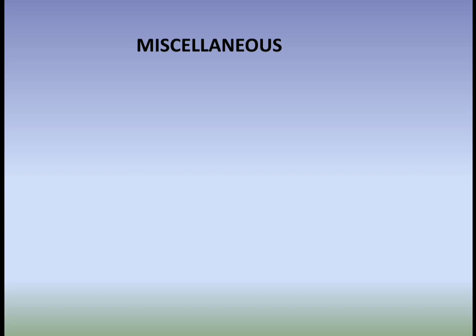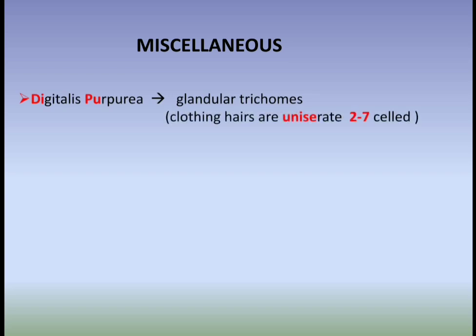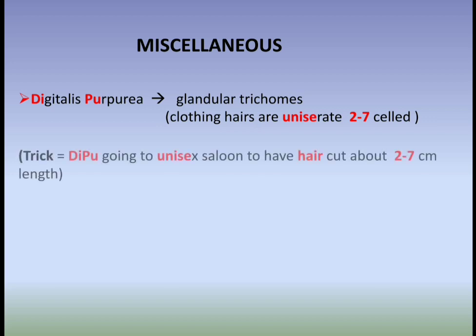Now for miscellaneous drugs. Digitalis purpurea shows granular trichomes and clothing hairs are unicellate, which are two to seven cells. The trick to remember this: 'Depo going to Unisex saloon to have a haircut of two to seven centimeter length.' Depo represents Digitalis purpurea, Unisex represents unicellate, and two to seven refers to cell count.